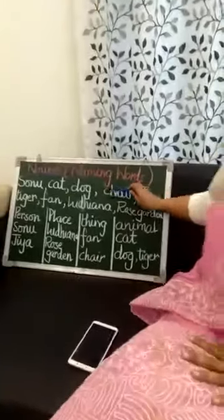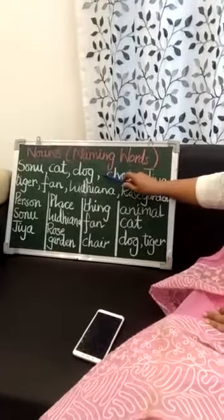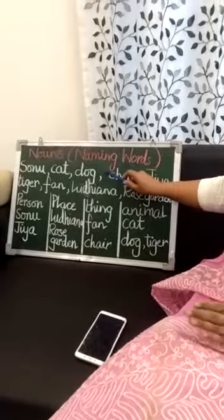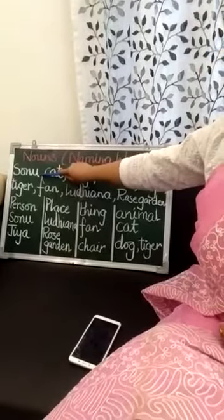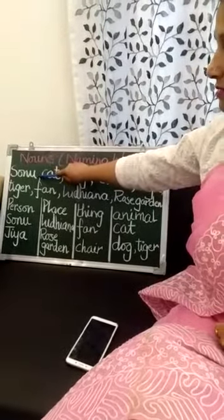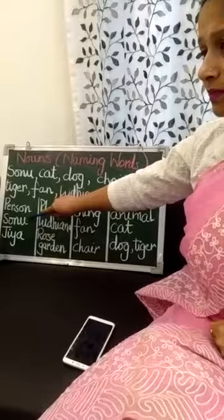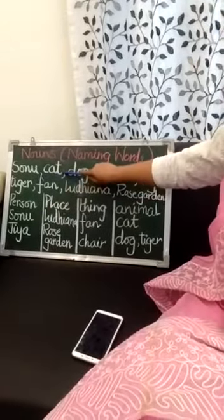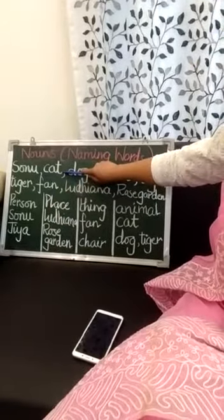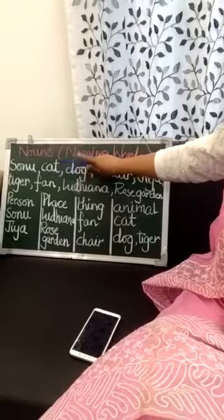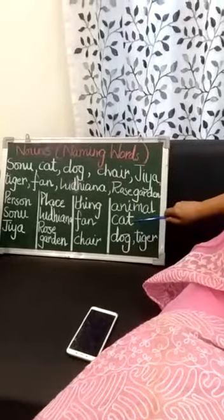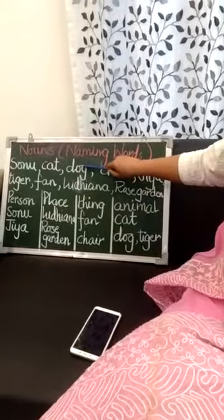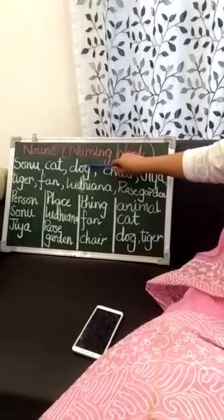Here is a list of some nouns. We will put them in a correct table. First word is Sonu. Sonu is the name of a person, so it will come here. Next word is Cat. Cat is an animal, so it will come here. Cat. Dog — again, it is an animal.